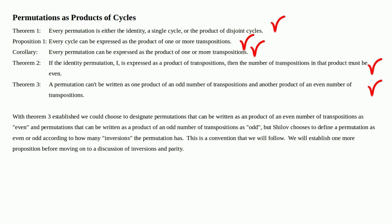Okay, with theorem three established, we could choose to designate permutations that can be written as a product of an even number of transpositions as even and permutations that can be written as a product of an odd number of transpositions as odd. But Shilov, the author of the text I'm using as my main reference, chooses to define a permutation as even or odd according to how many inversions the permutation has. This is a convention that we will follow. We will establish one more proposition before moving on to a discussion of inversions and parity.